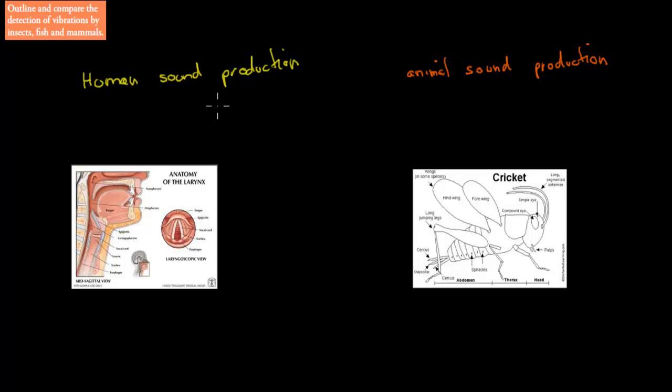In the last chapter, we talked about sound production. We talked about how humans produce sound and how animals produce sound. We also quickly talked about what sound actually is—that it's a wave created by vibrations of a source. We talked about the larynx being that source for humans and the wings for crickets. So that's what we covered in the last chapter.